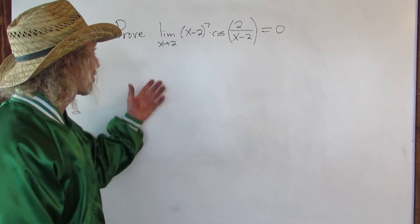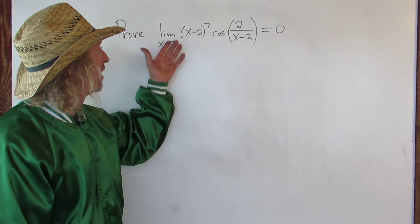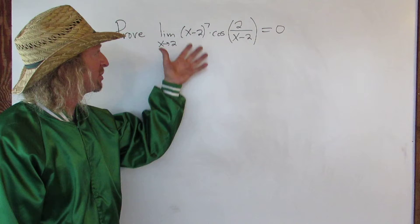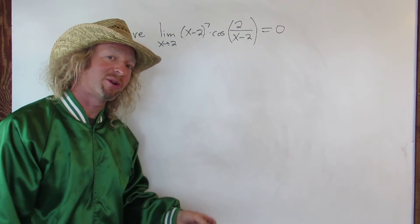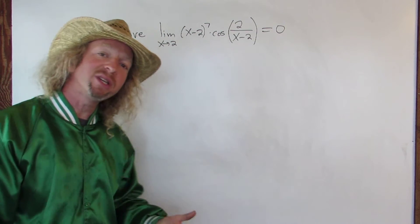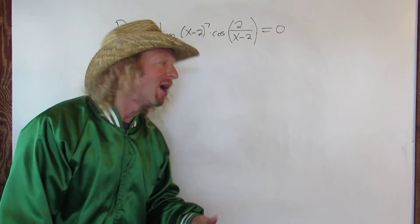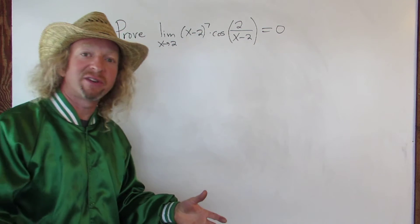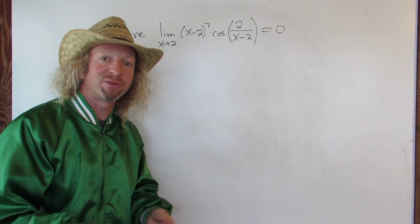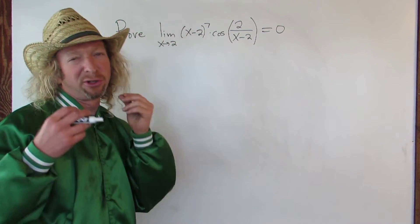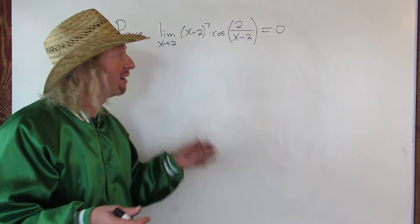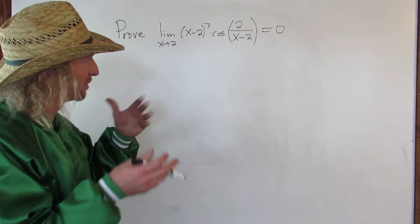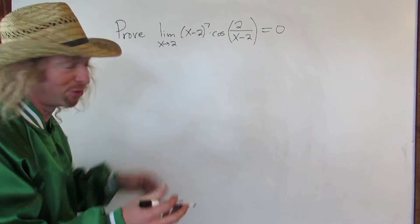Hey, what's up YouTube? In this problem we're going to prove that this limit as x approaches 2 is equal to 0. This is pretty easy to do with the squeeze theorem, but let's go ahead and give a delta-epsilon proof just for a little bit more rigor — a very similar proof, so let's go through it.